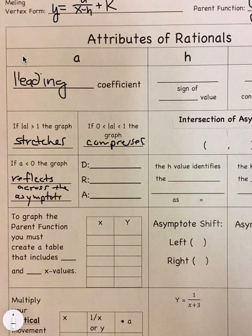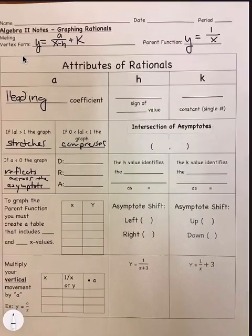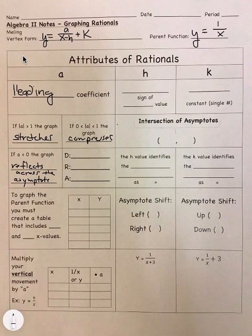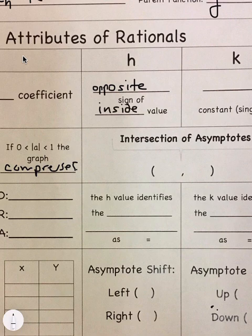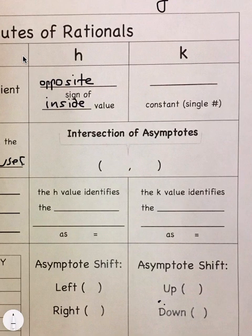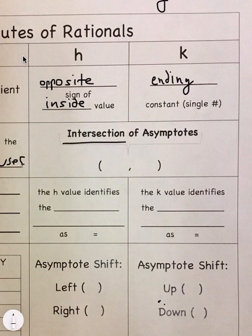And we'll get to that here in a second. So the h value always is the opposite sign of the inside value. So just remember, the h value is connected to the x. The k value is our ending constant, just like before. And now instead of finding the vertex, we're finding the intersection of the asymptotes, which is h and k.